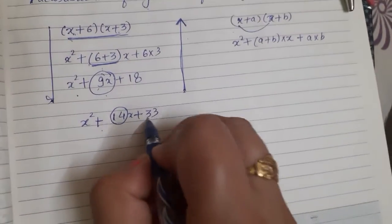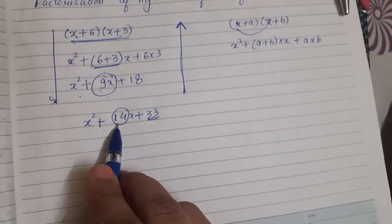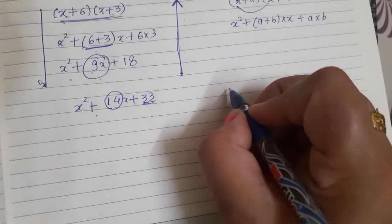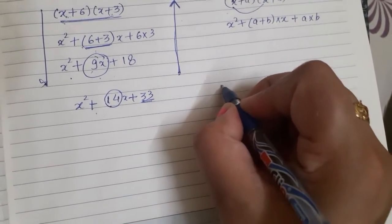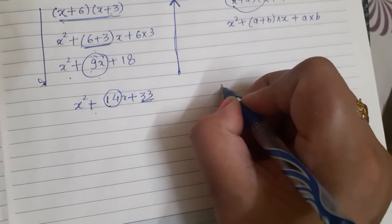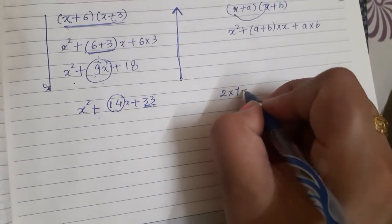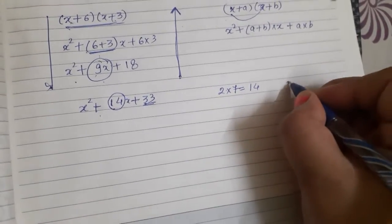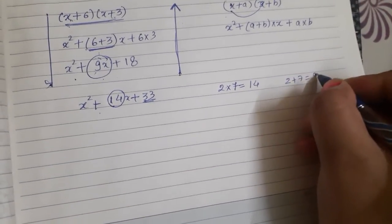How we are going to break the midterm? Let's see the combination of 14. How we are getting 14? When we are adding 2 into 7. This is the product. 2 into 7 is 14 and 2 plus 7 will give us 9.